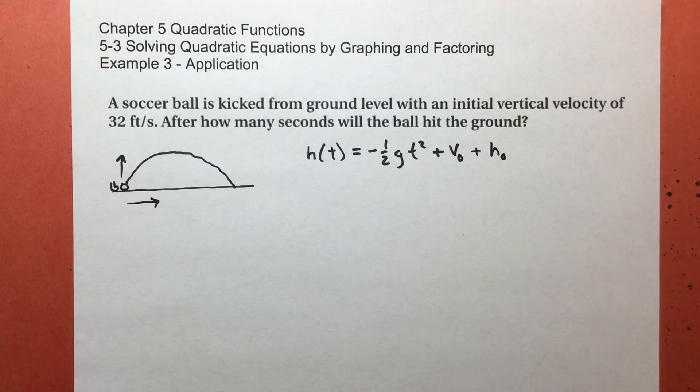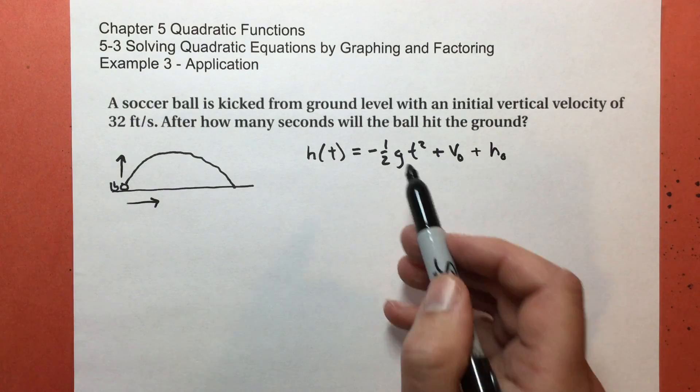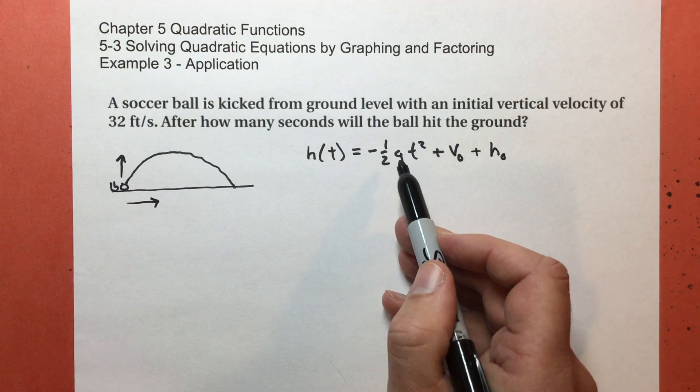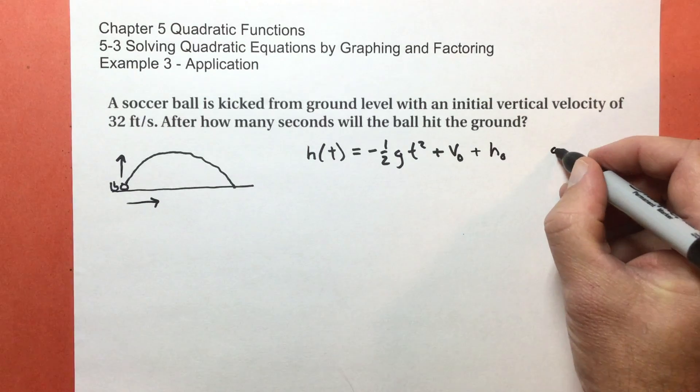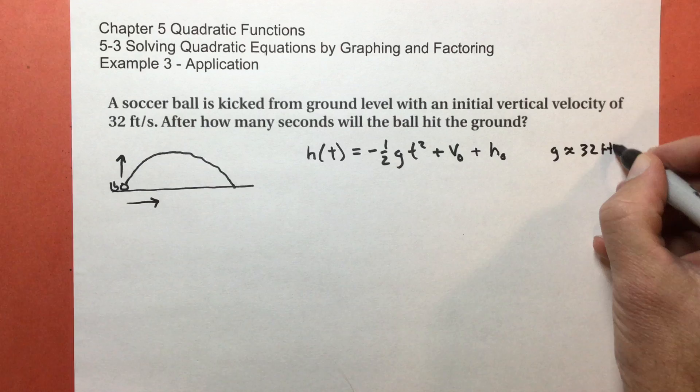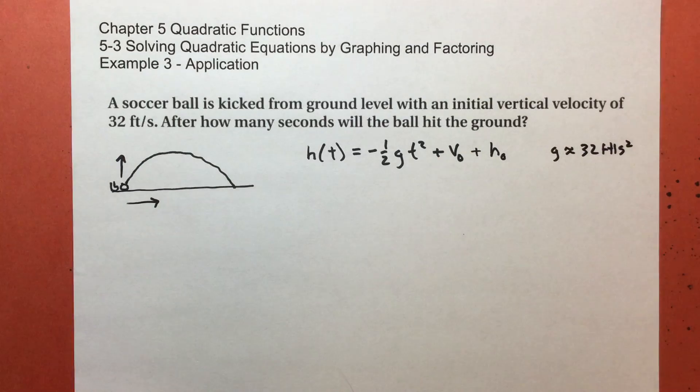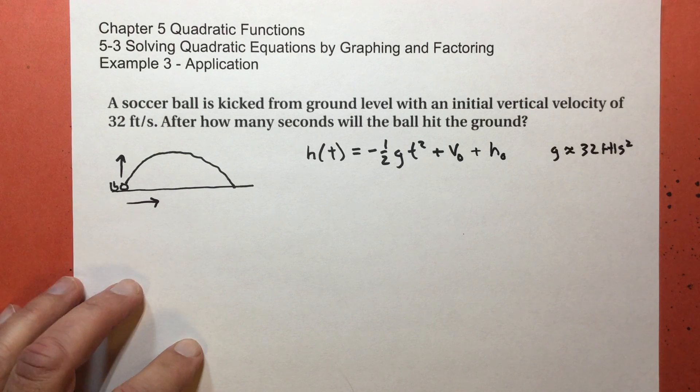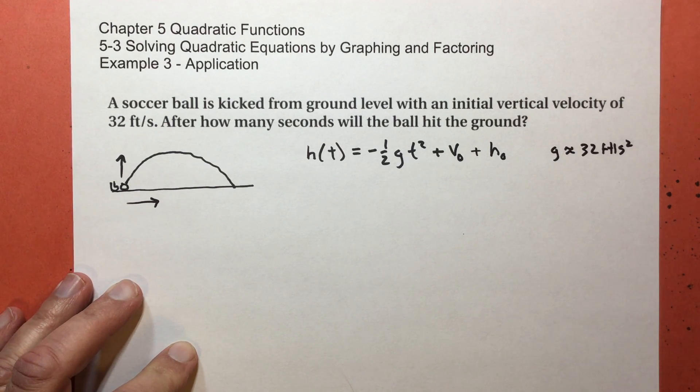Now, on Earth, this g is a constant. That's the acceleration due to gravity. So g is about 32 feet per second squared. In the metric system, it's about 9.8 meters per second squared.